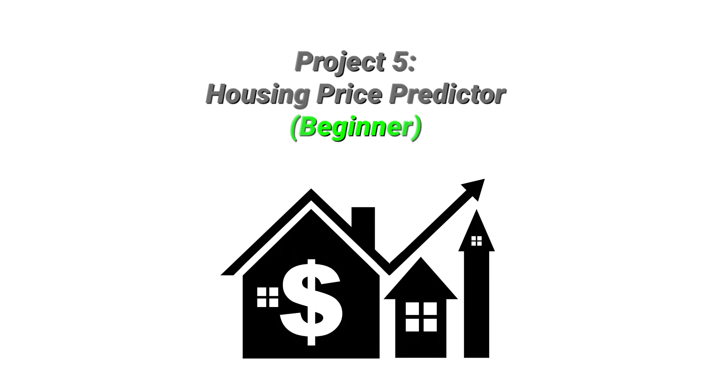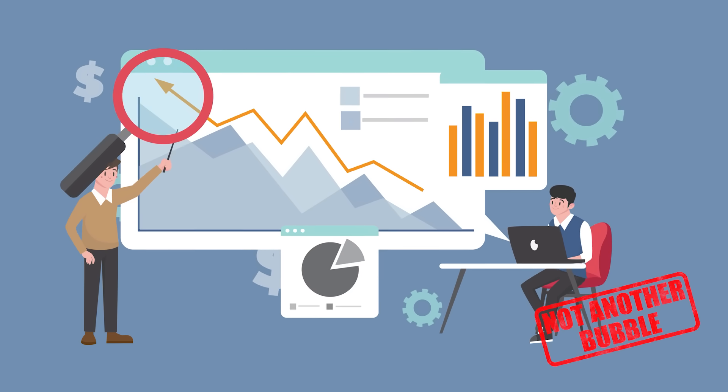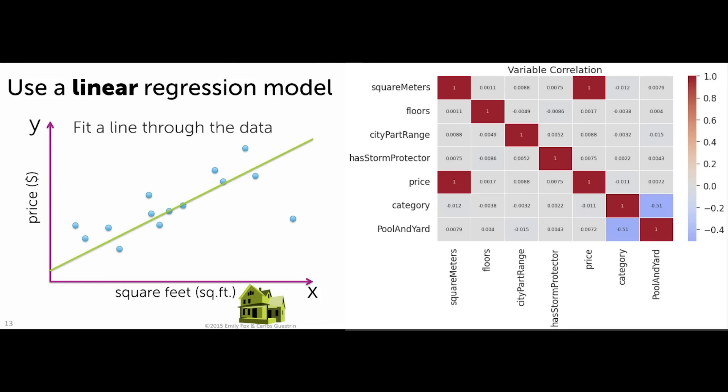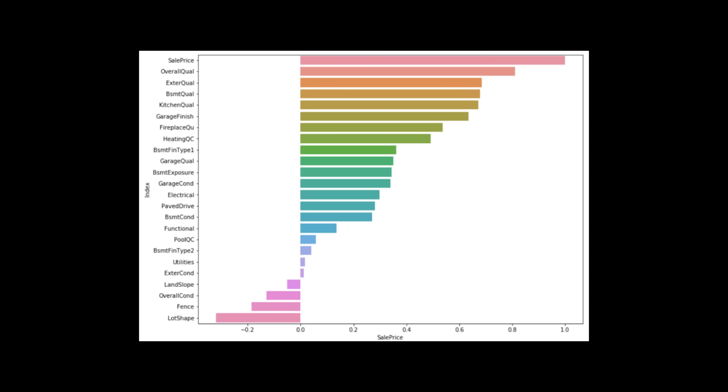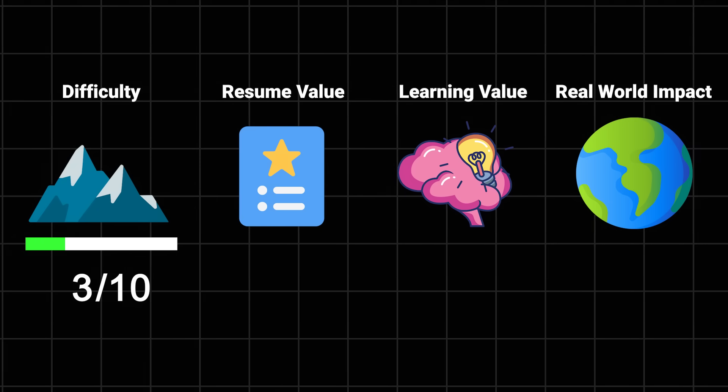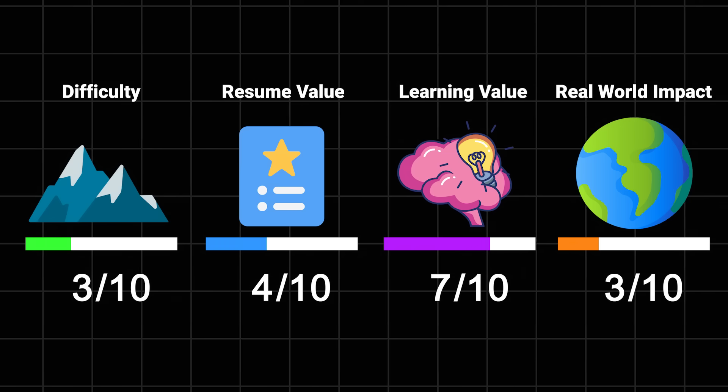Housing price predictor - my favorite prediction example project. Let's build something that every tech company seems to need: a system that can predict housing prices. But don't worry, we're not going to be responsible for the next housing bubble. Probably. You'll learn about regression analysis, why the number of bathrooms matters more than you think, and why your model keeps thinking every house in San Francisco is worth millions. Spoiler: because they are. You'll also learn about feature selection. Turns out your house's color probably doesn't affect its price as much as its location. Difficulty: 3 out of 10. Resume value: 4 out of 10. Learning value: 7 out of 10. And impact: 5 out of 10 because everyone needs to live somewhere.